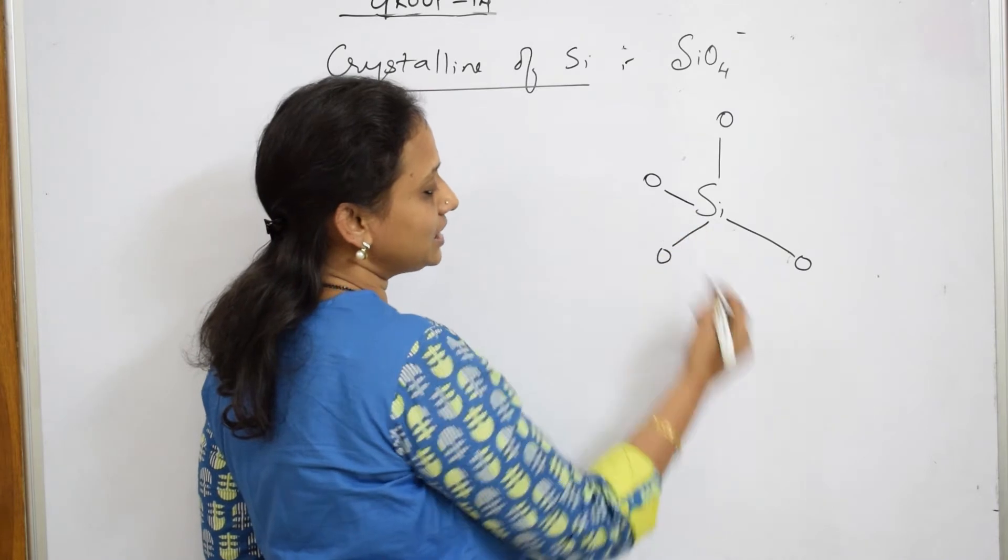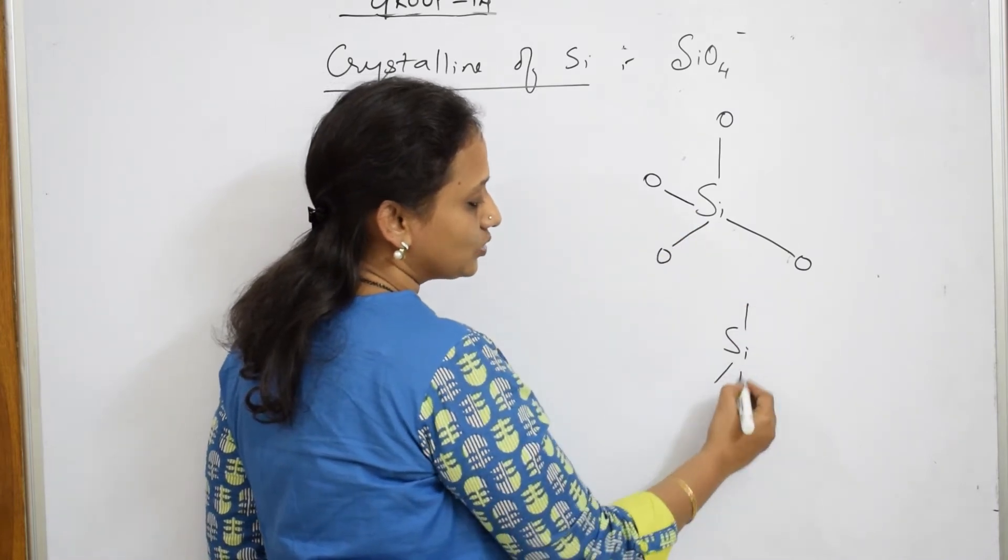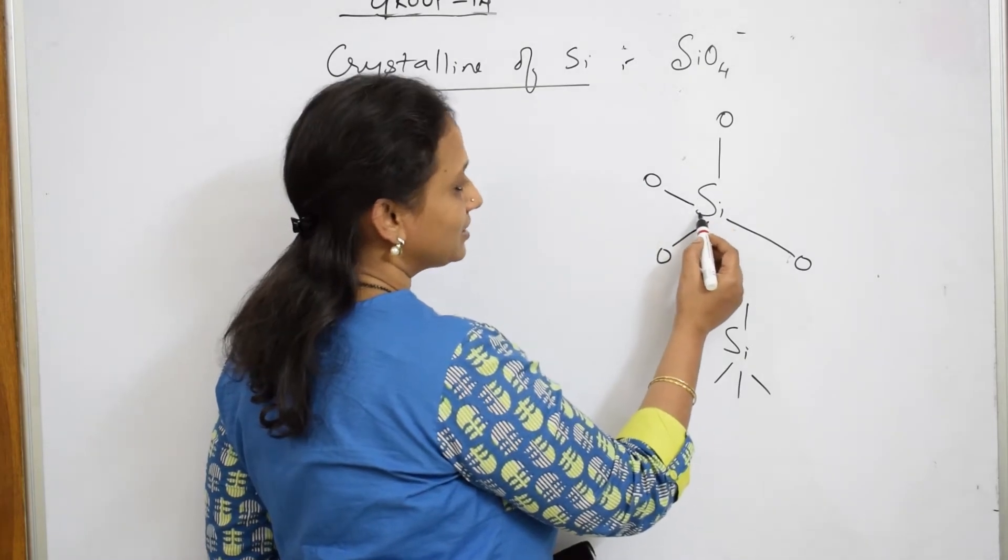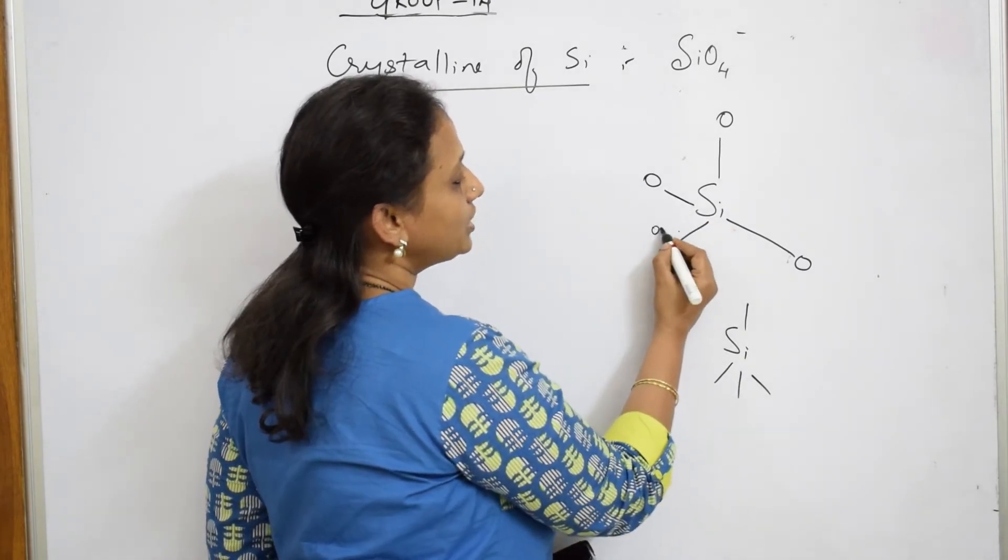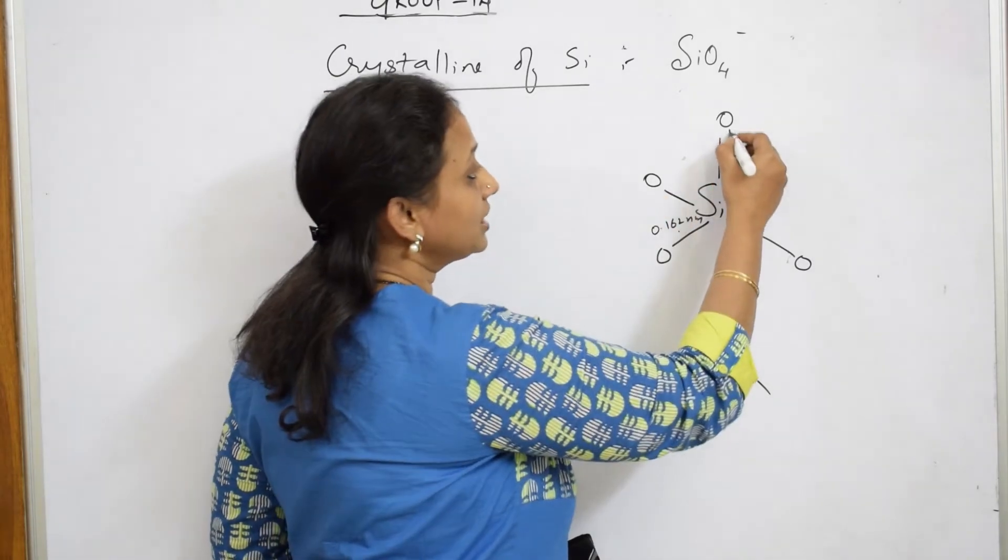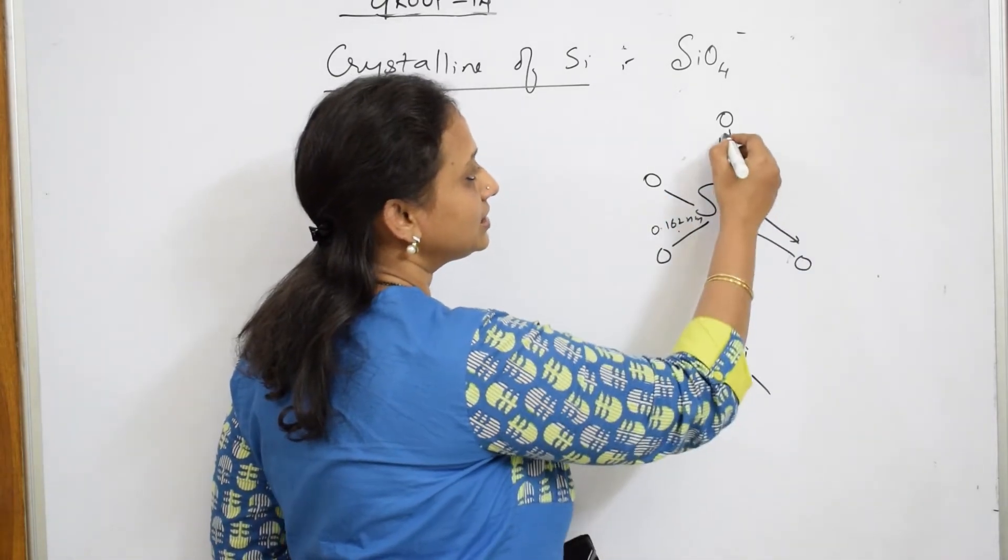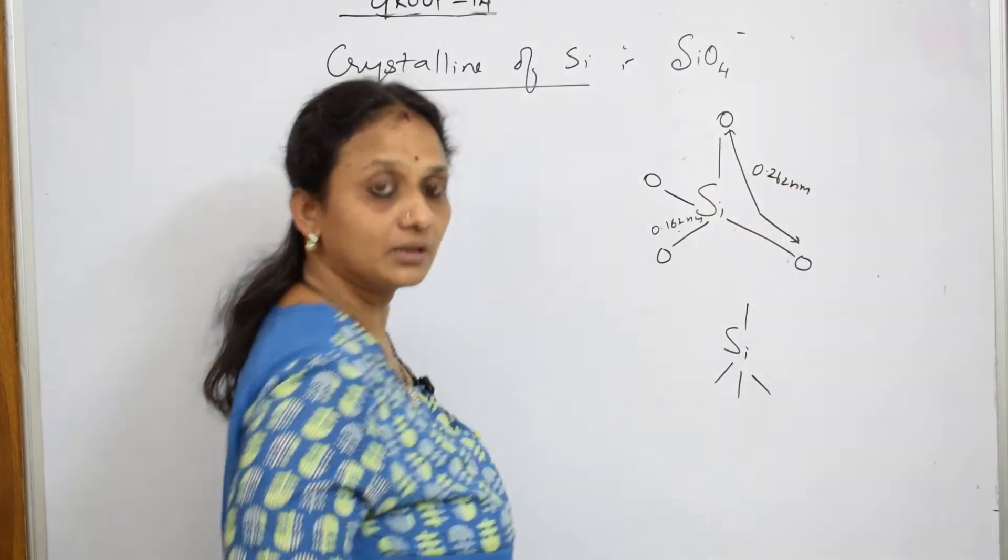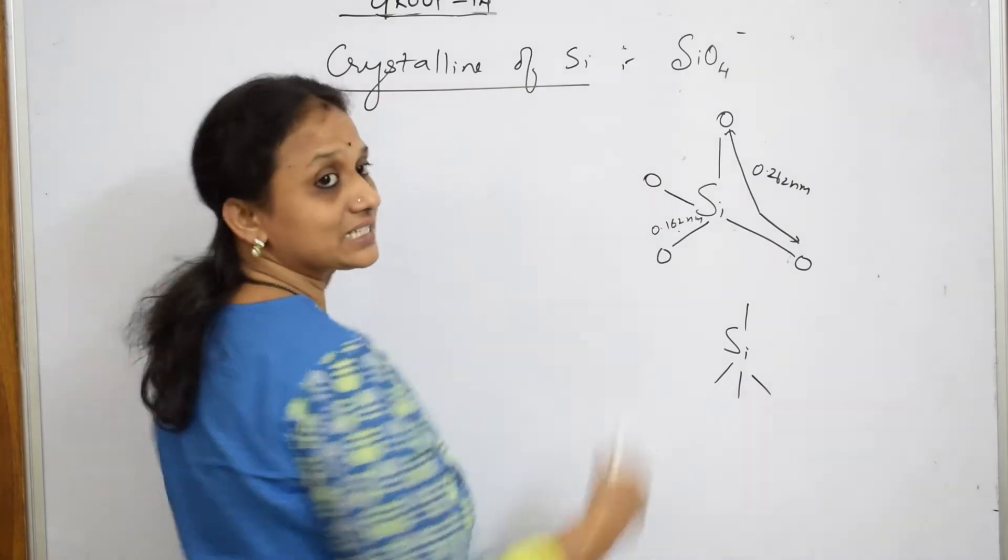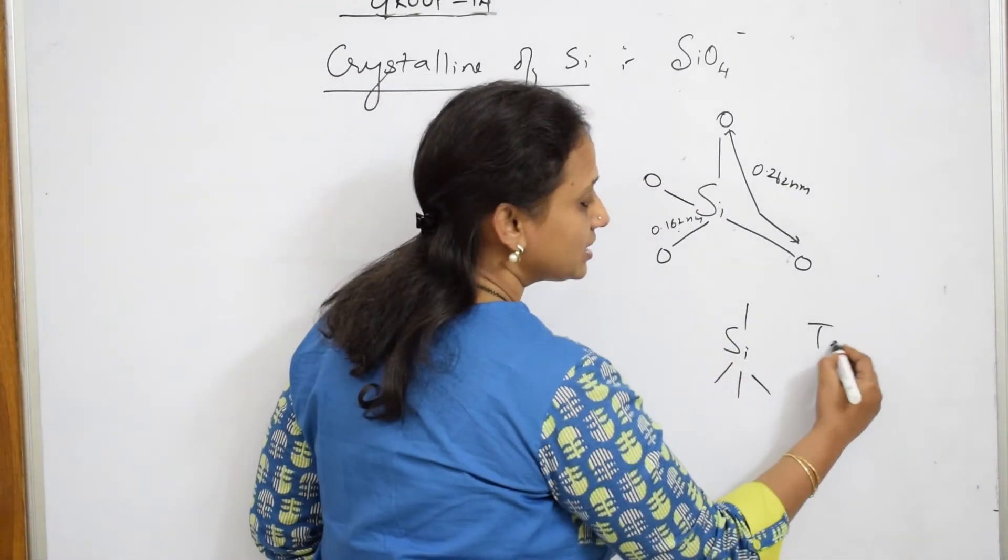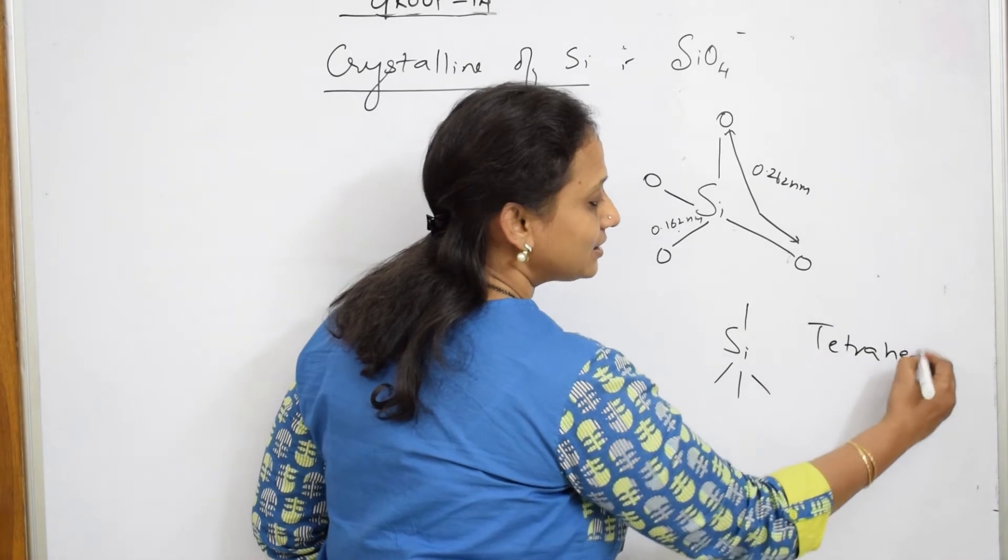So it basically looks like this tetrahedral structure. The bond length between this and this is 0.162 nanometer, and the bond length between this is 0.262 nanometer. Basically I'm showing it towards the inner side of the board. What is the structure? It has a tetrahedral arrangement.